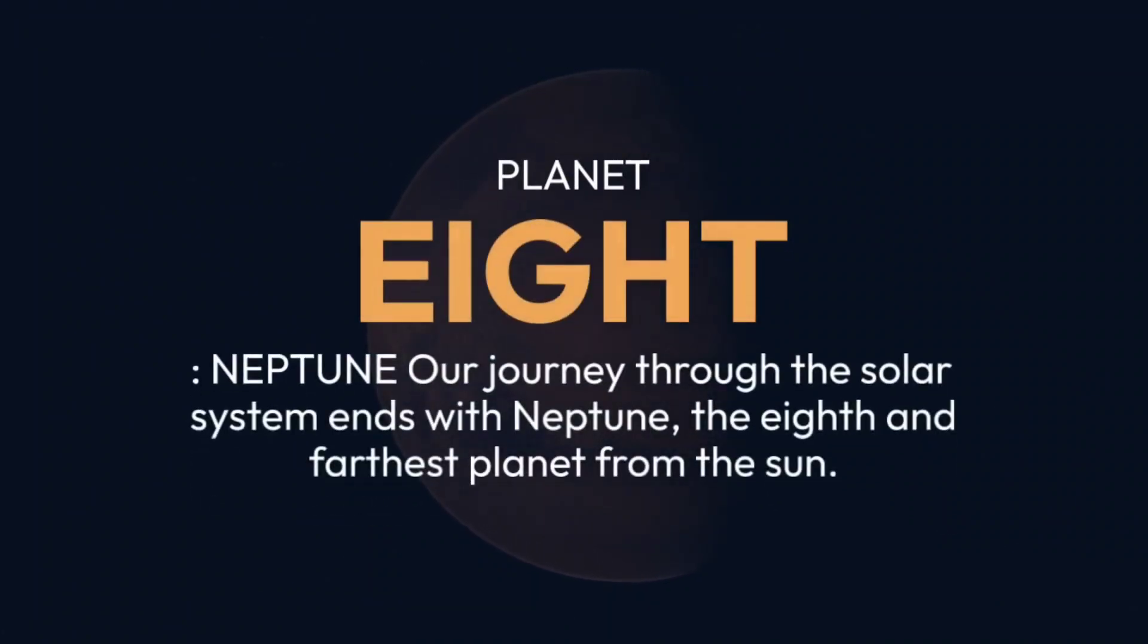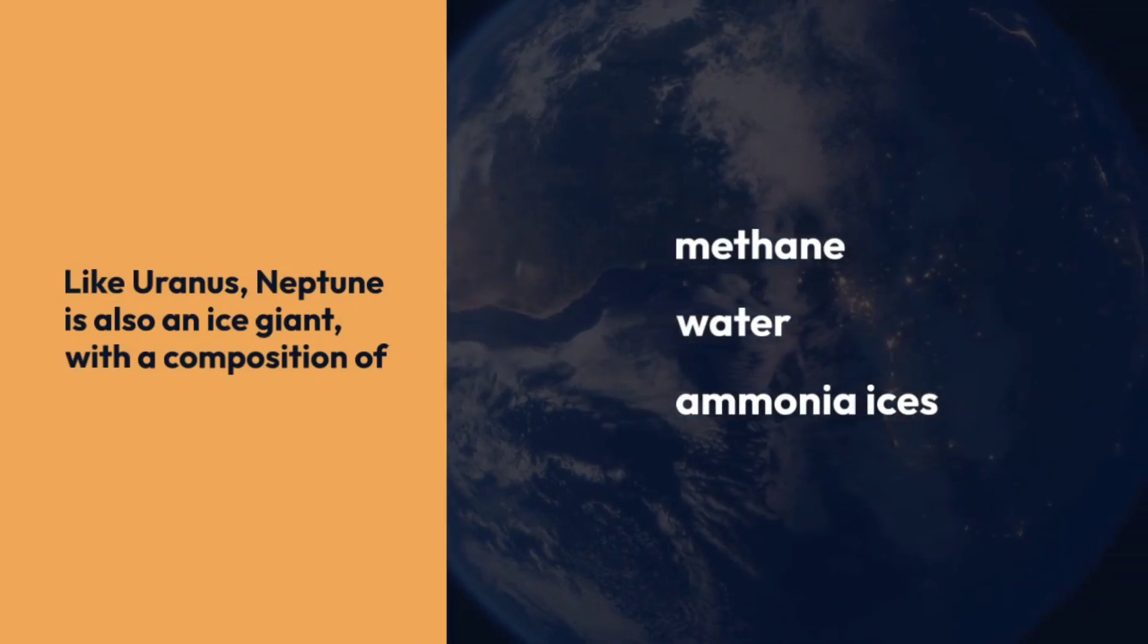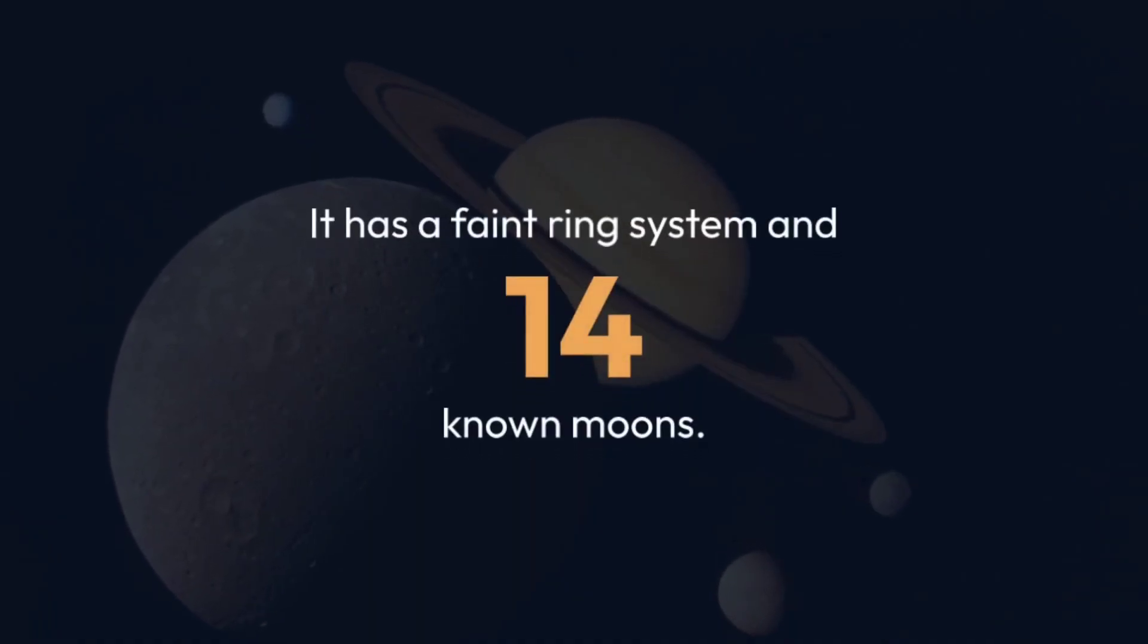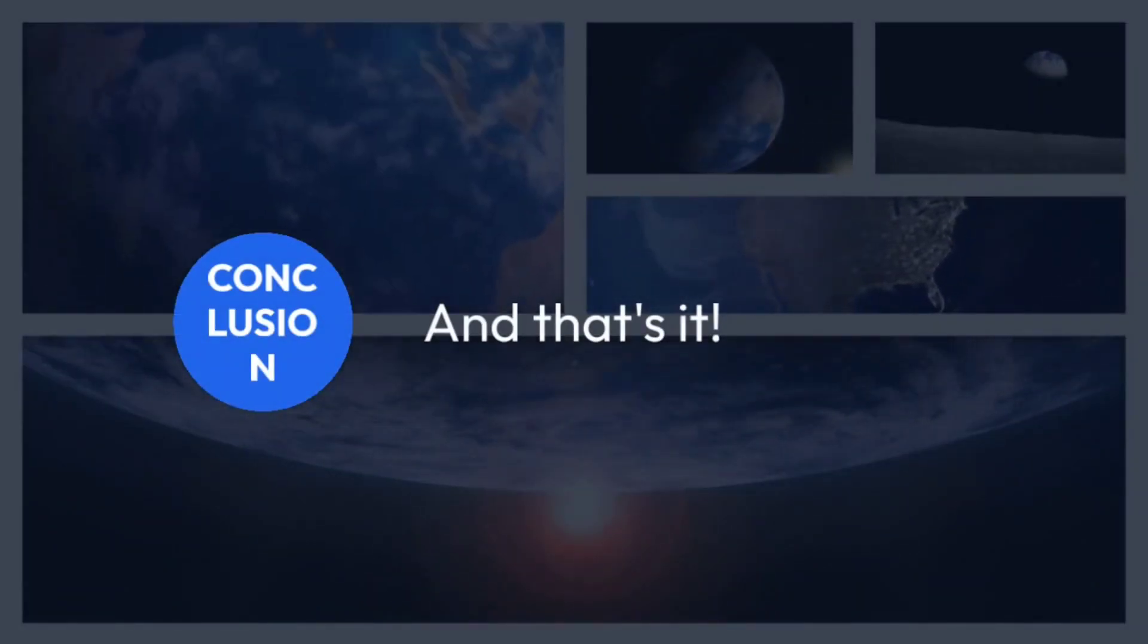Planet 8: Neptune. Our journey through the solar system ends with Neptune, the eighth and farthest planet from the sun. Like Uranus, Neptune is also an ice giant, with a composition of methane, water, and ammonia ices. It has a faint ring system and 14 known moons. It takes 165 Earth years for Neptune to orbit around the sun.